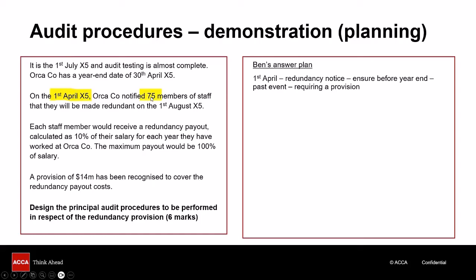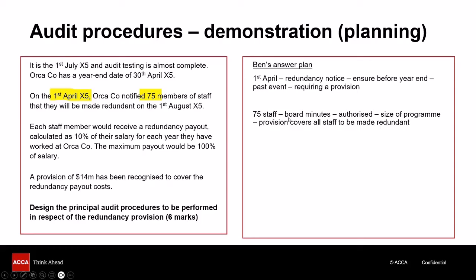My next fact: there are 75 members of staff. But is that a full, complete list? Could some people be missing? Because if they are, that $14 million might not be correct. Where would this decision have been discussed — who would know? It's the board. So I can go and look at the board minutes to make sure there really are 75 people being made redundant, that the board have discussed this, and that they've authorized this redundancy program. If it's not authorized it might not happen. This confirms the provision covers everyone and isn't understated.